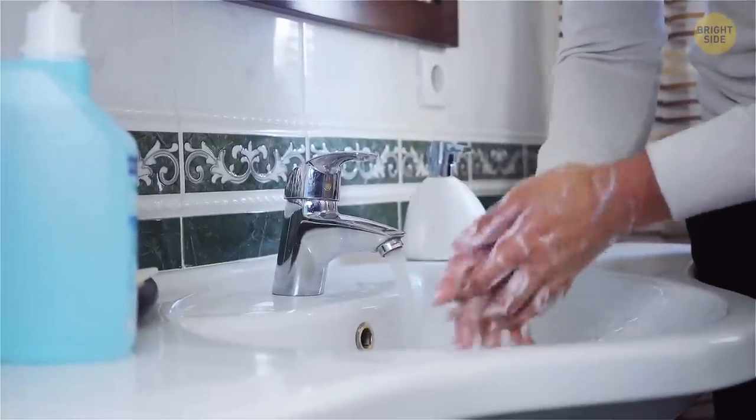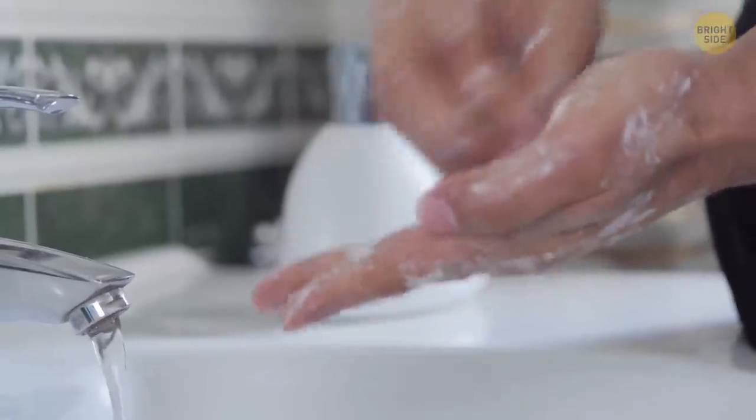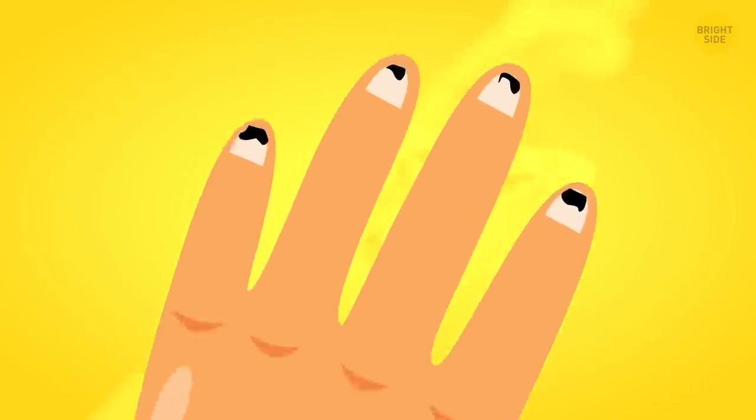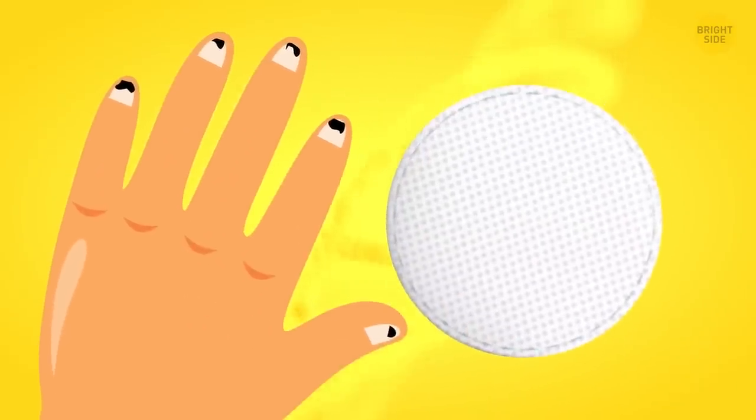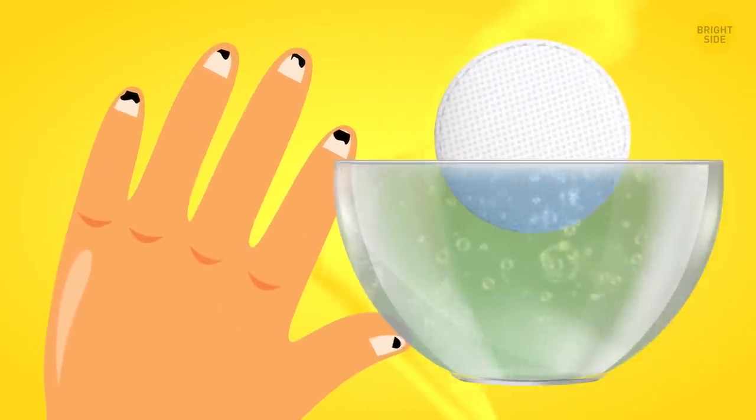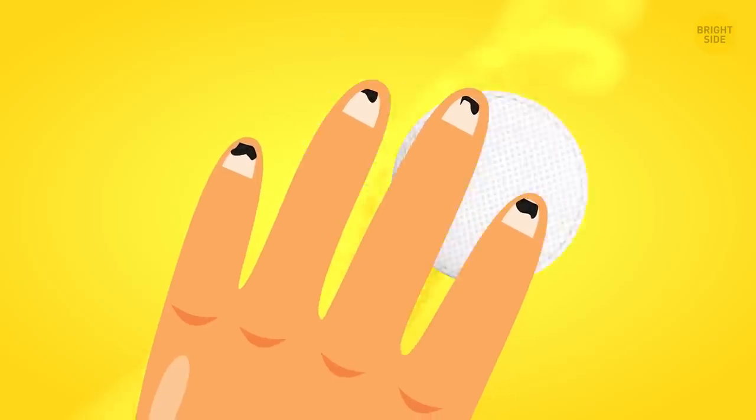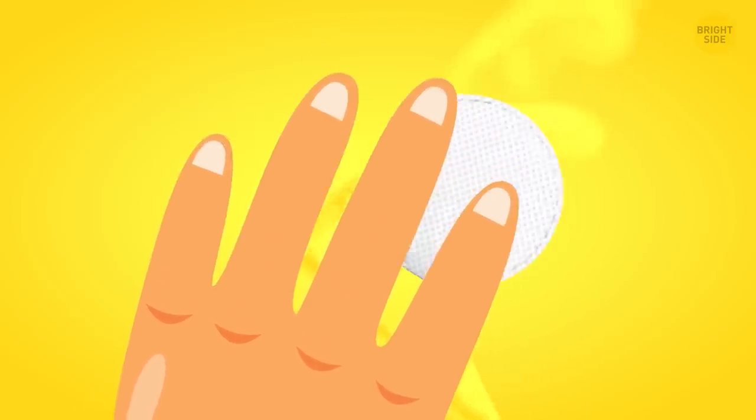For proper nail care, washing your hands with soap is usually enough. But if the grime persists, soak a cotton pad or swab in warm soapy water and carefully clean underneath all your fingernails until there's no more visible dirt.